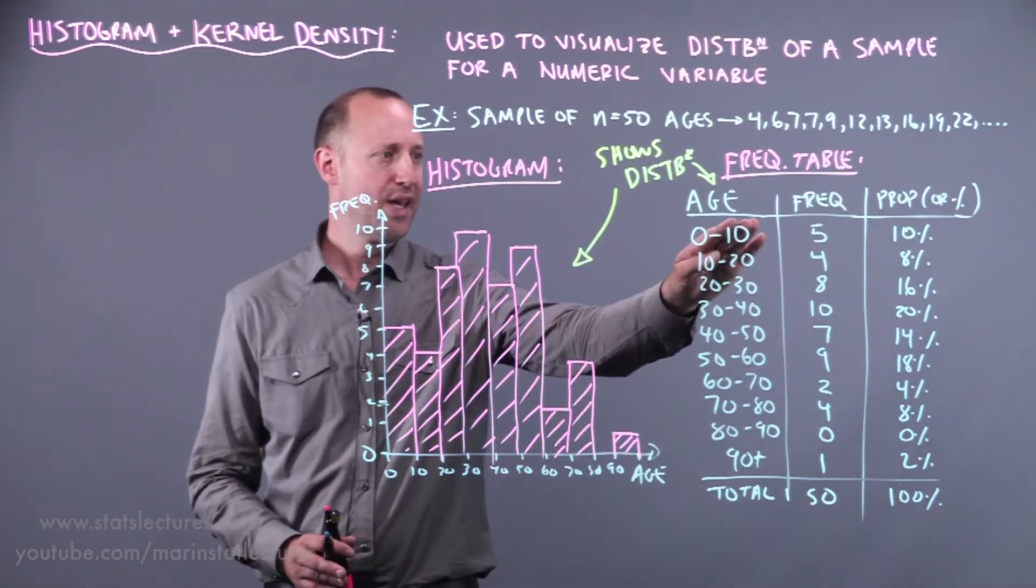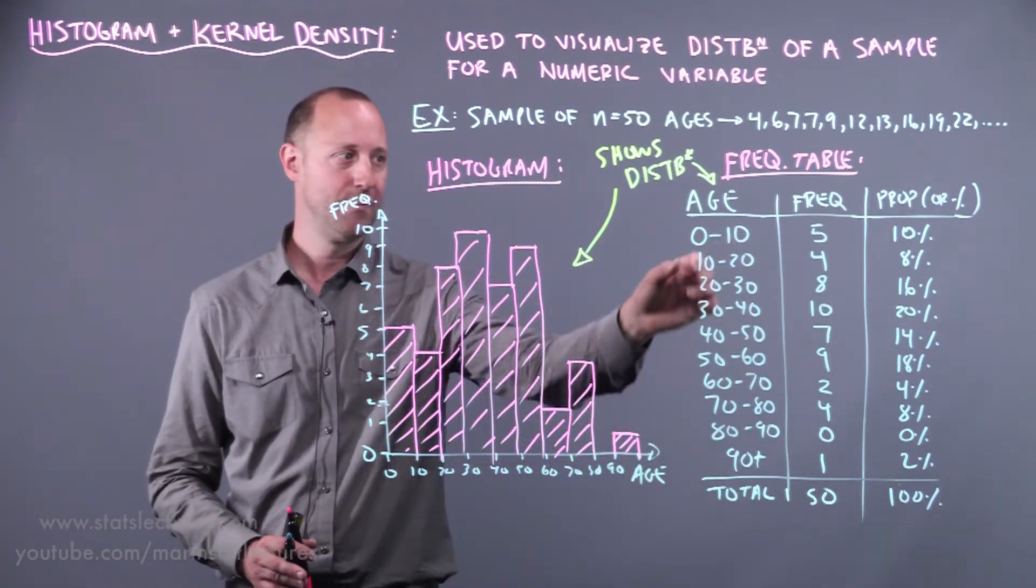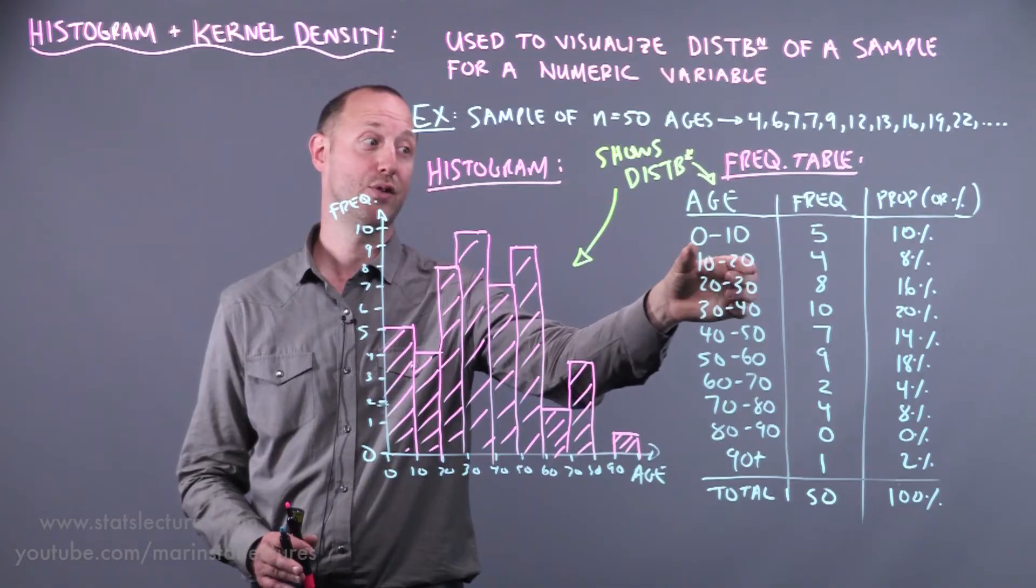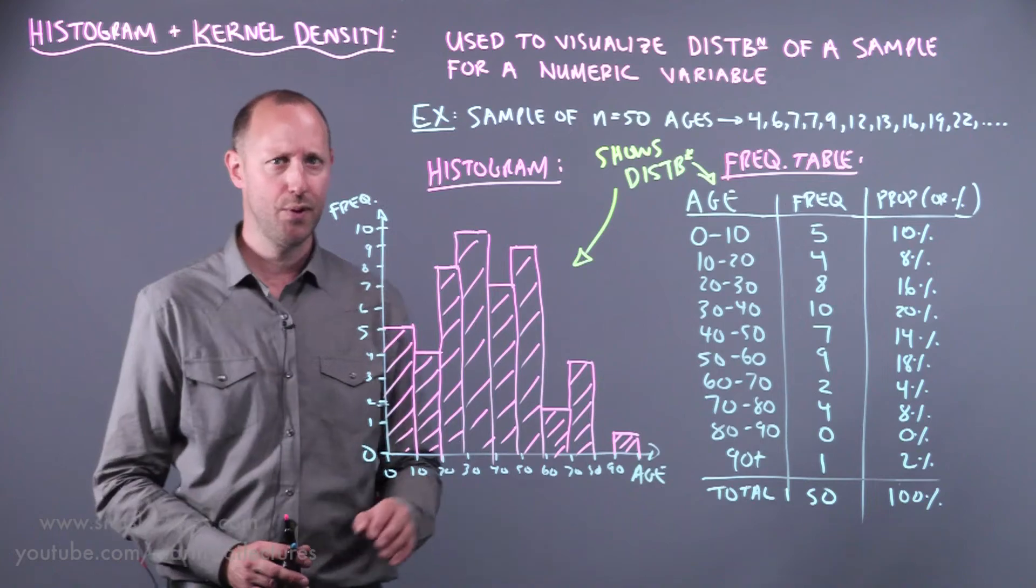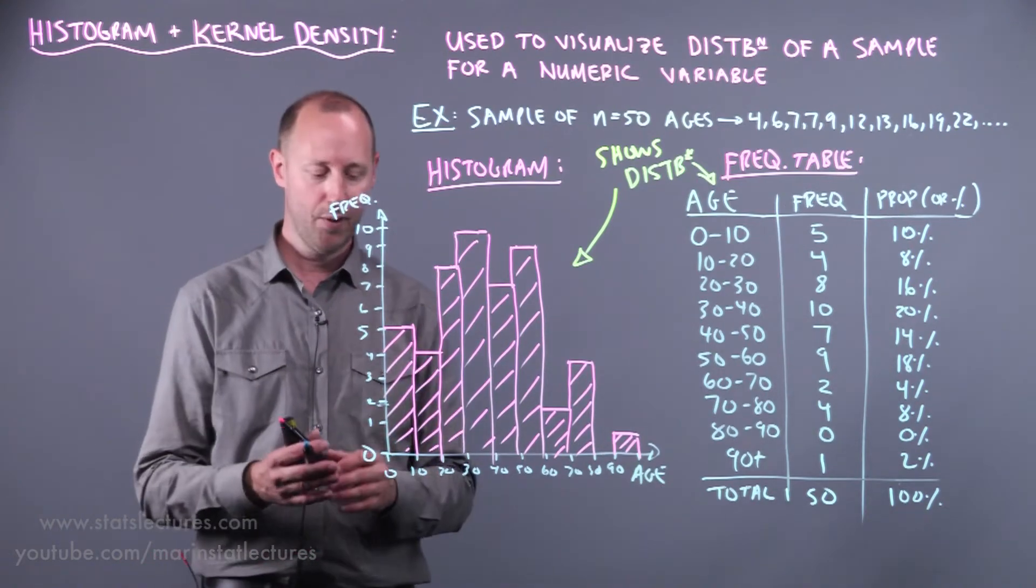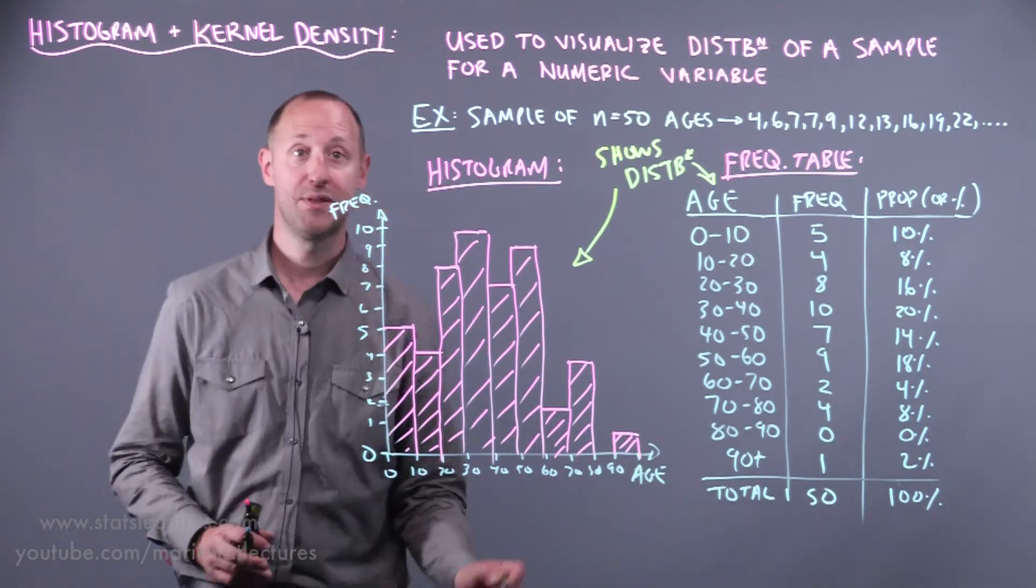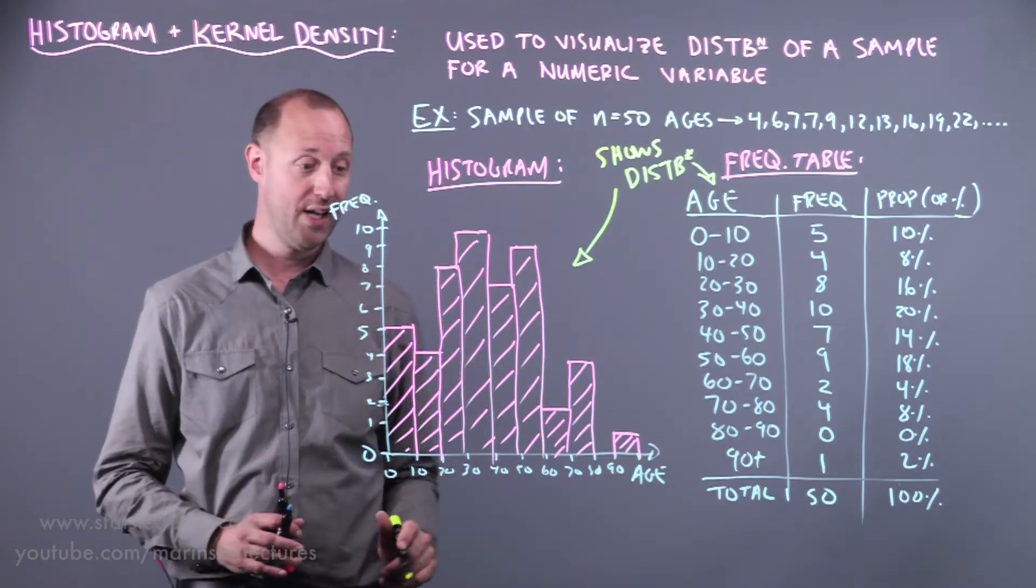As mentioned before if we were to change the bins. If we were to make them bigger say 0 to 20, 20 to 40 and so on. The shape of this might change slightly. So it's important to note that.